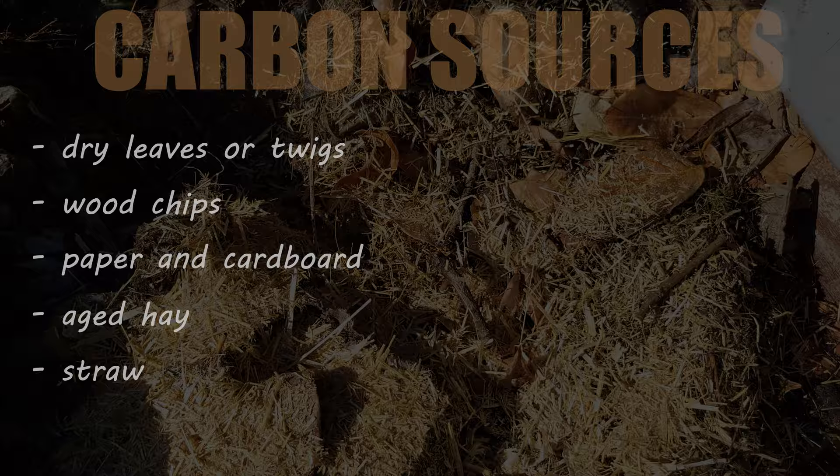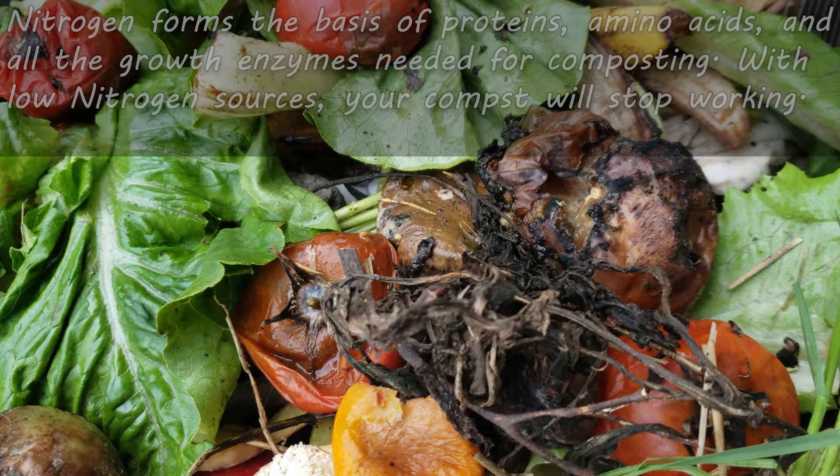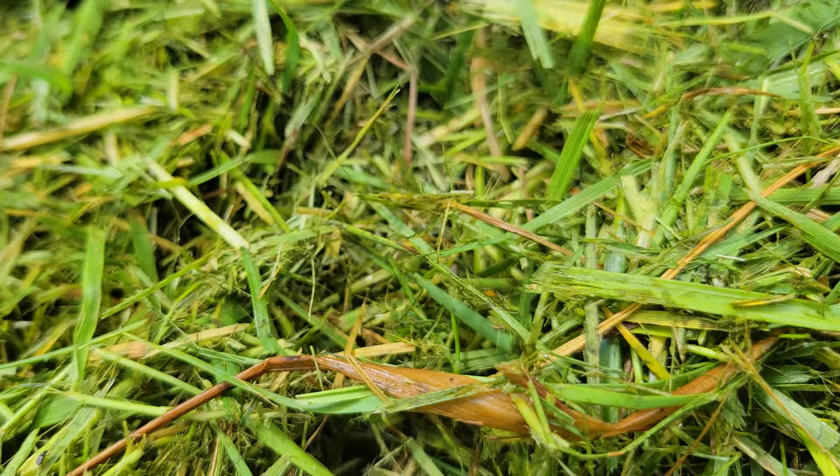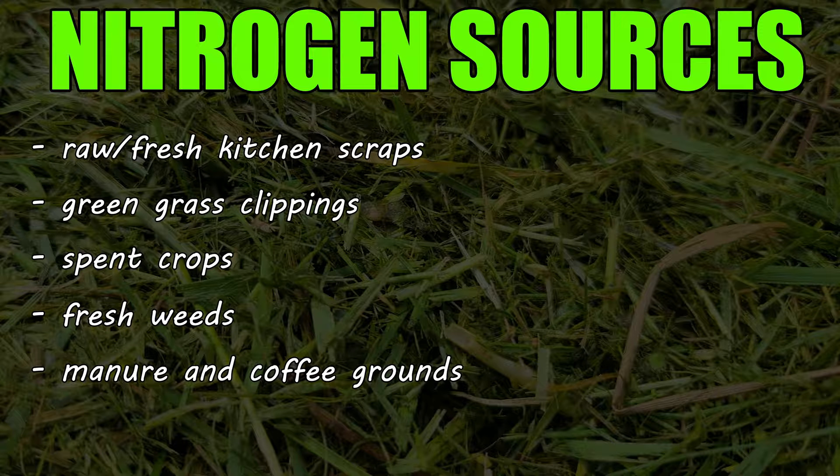Nitrogen, on the other hand, forms the basis of proteins and growth enzymes. Without adequate nitrogen sources in your compost piles, microbial activity essentially stops functioning. And these sources are going to be things such as raw kitchen scraps, green grass clippings, spent plants, pulled weeds, manure, and even coffee grounds.